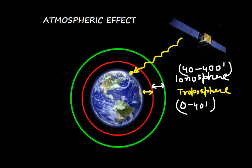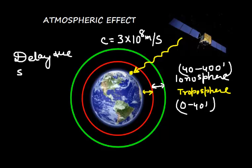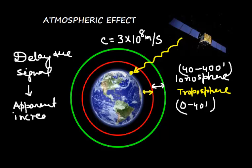The troposphere extends from 0 to 40 nautical miles, and the ionosphere from 40 to 400 nautical miles. The GPS signal travels at the speed of light, which is 3×10⁸ meters per second. The net effect of these atmospheric layers is that they delay the signal, and this delay results in an apparent increase in pseudo-range.